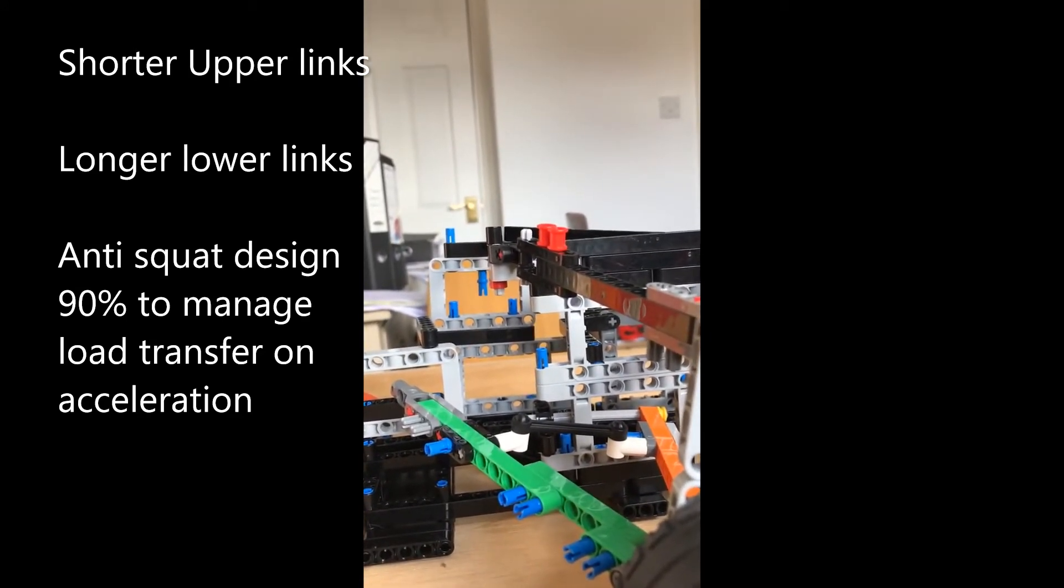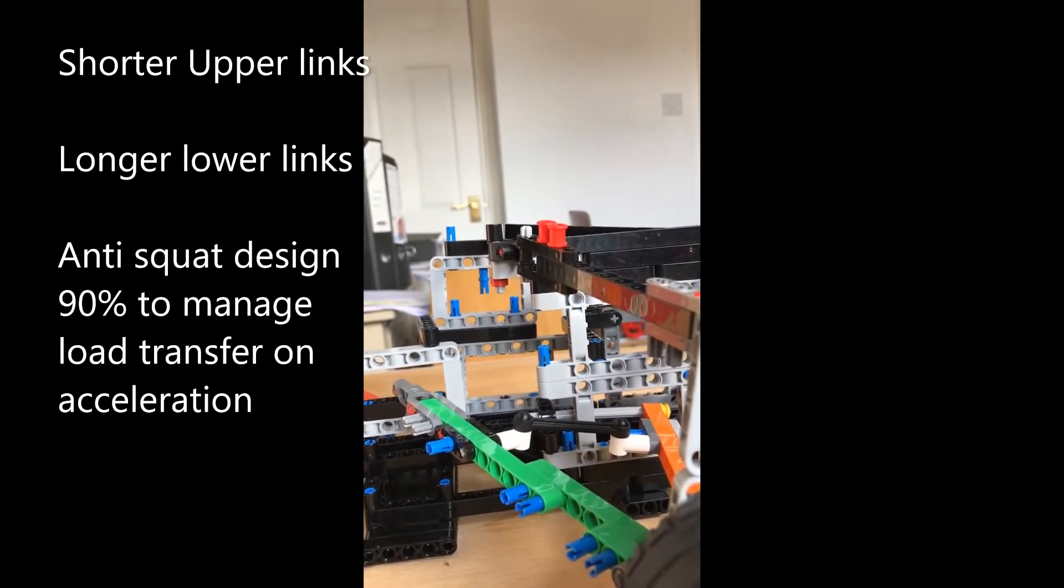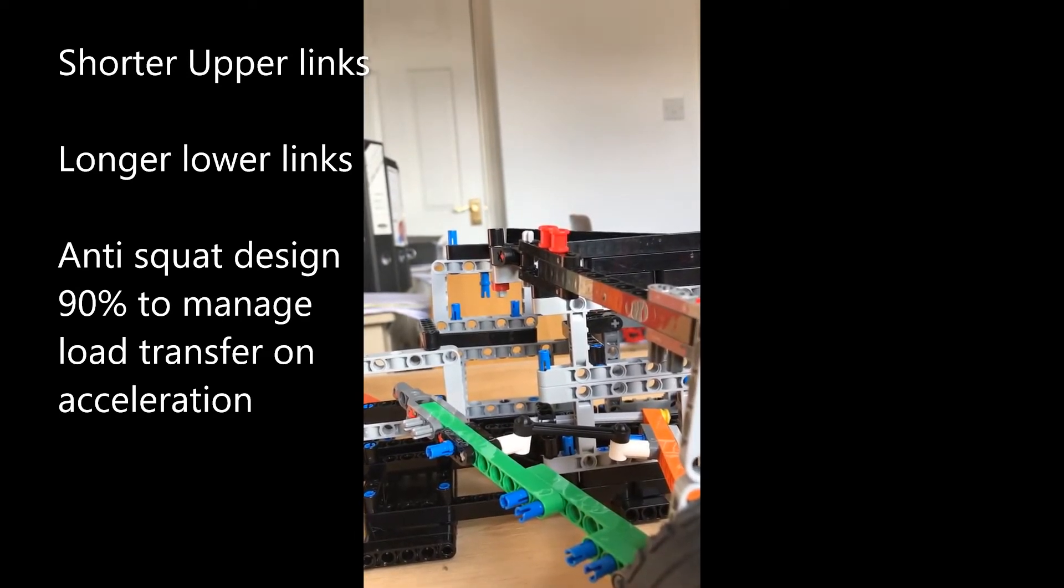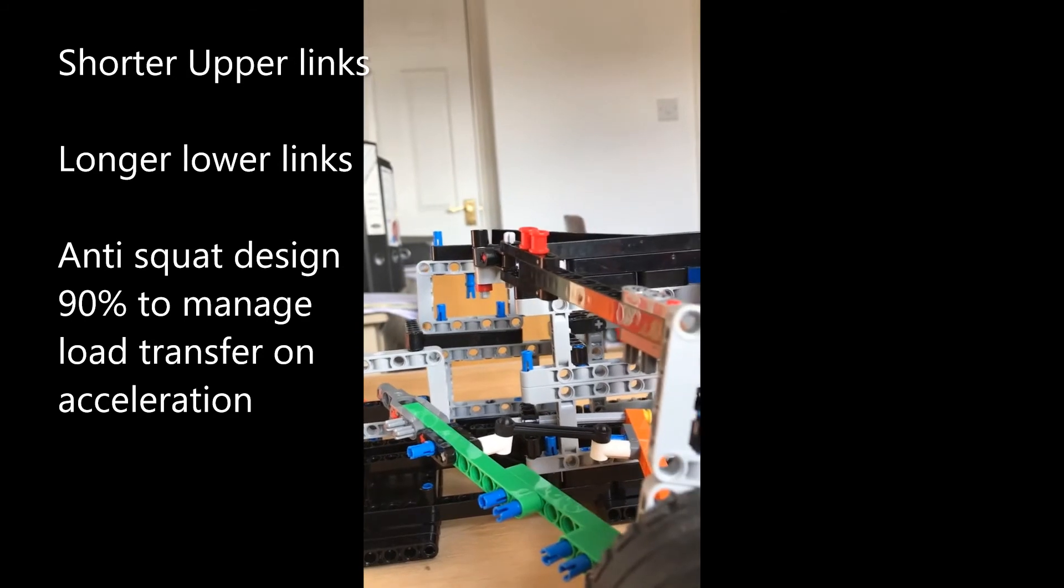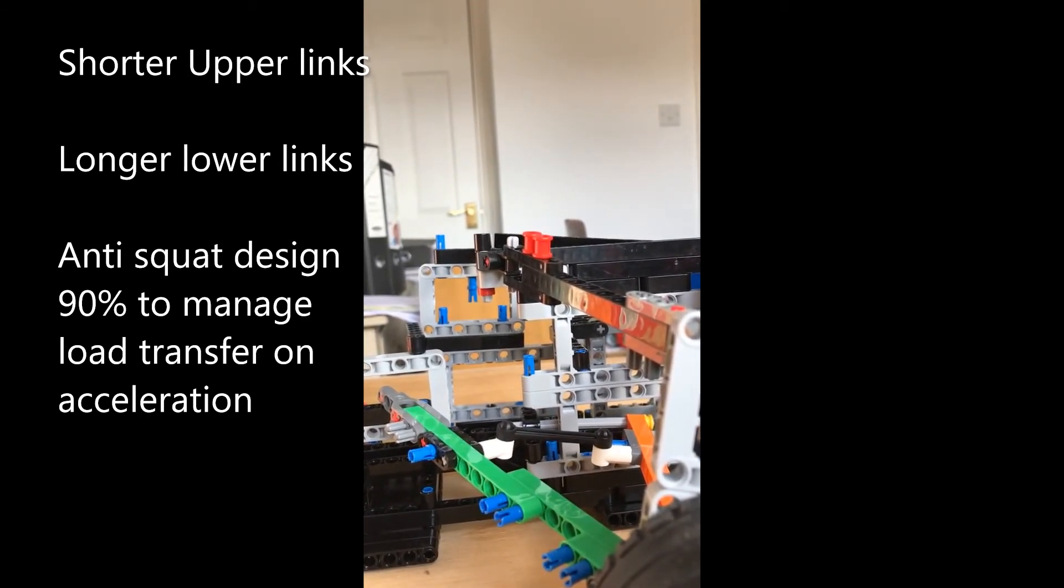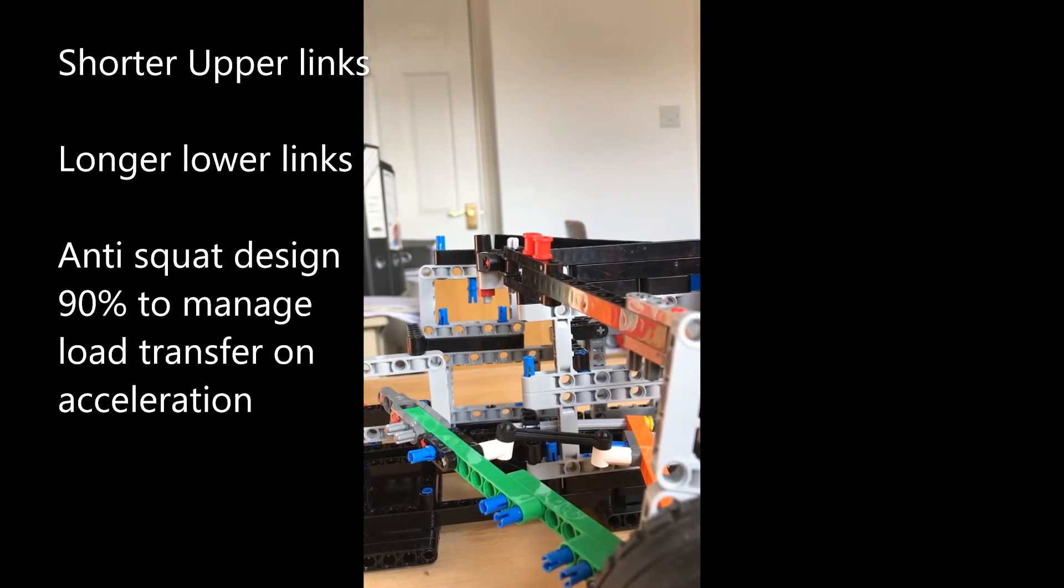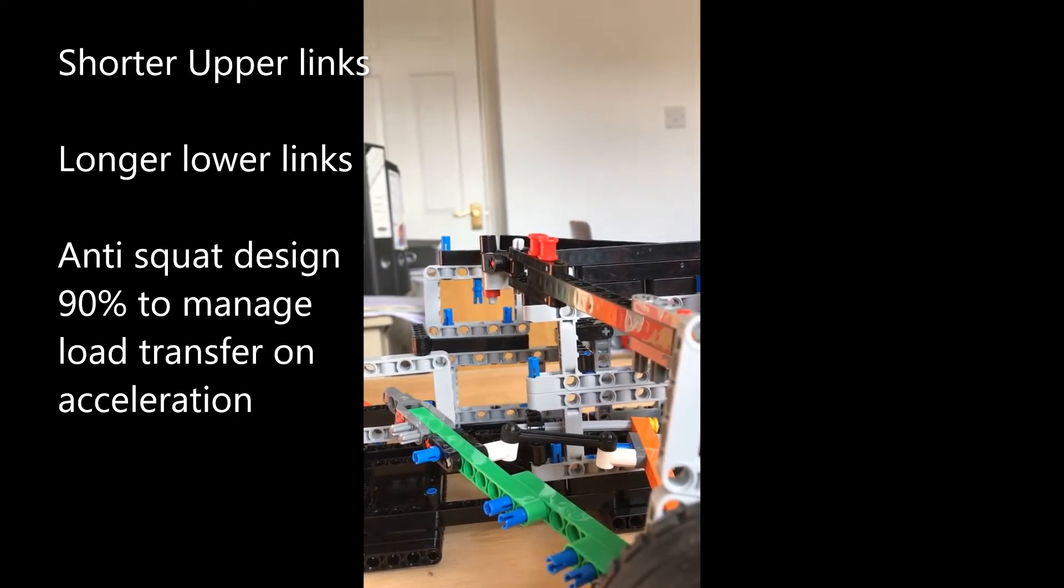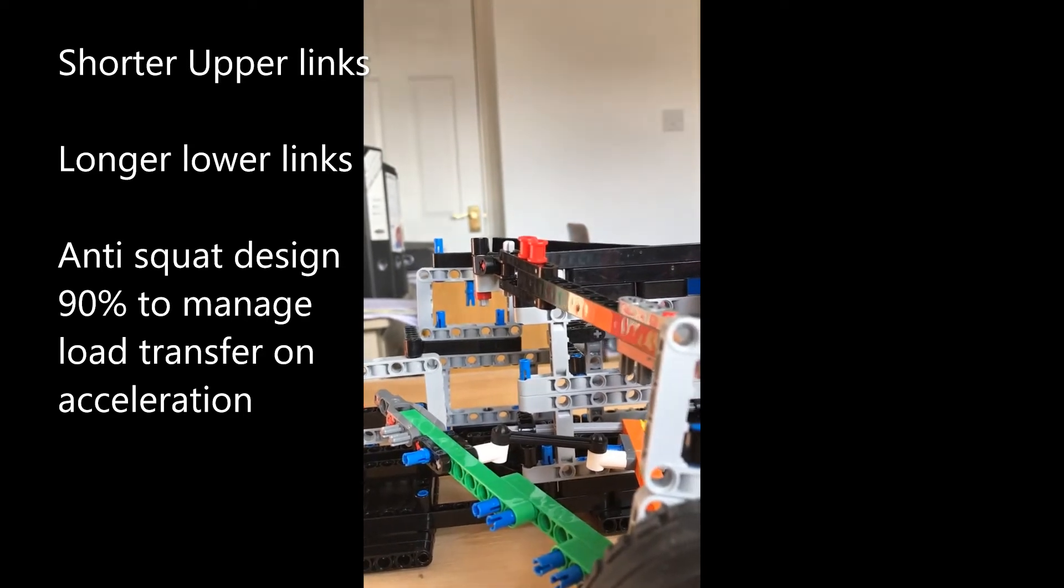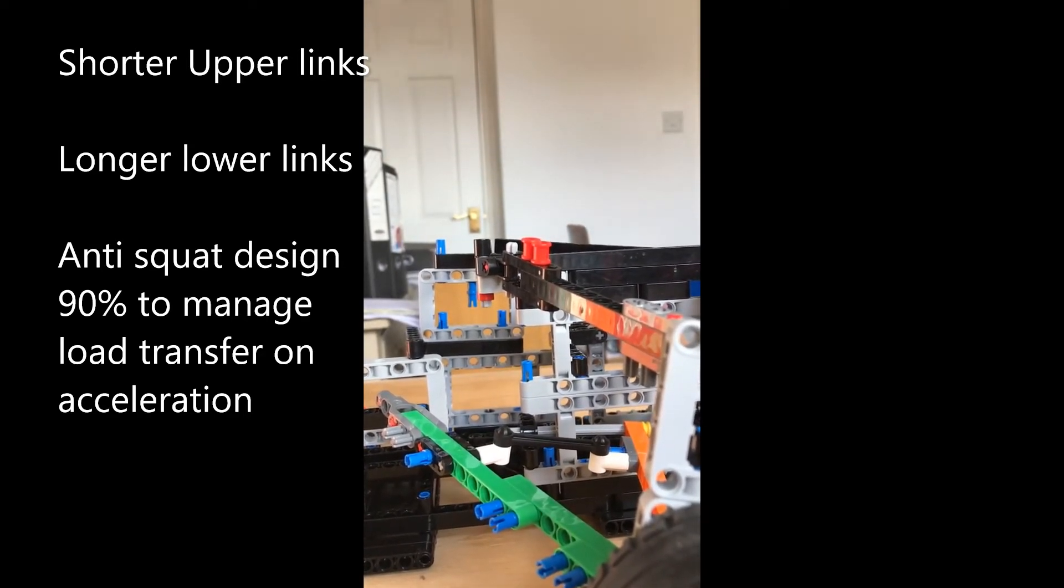Which basically means that when the car is on power and is squatting, the control arms manage and take all of the force through the weight transfer, the load transfer to the rear axle. That means that the springs and the dampers don't. And this is quite high, 90%. Typically cars have 70% or thereabouts. So really quite high anti-squat angle.